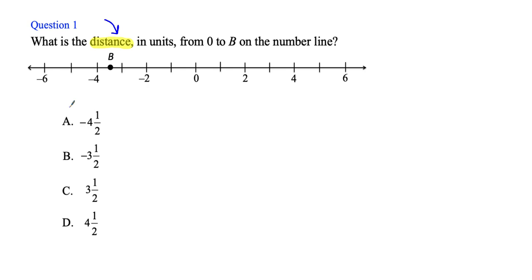Which two answers can we eliminate right off the bat? A contains a negative sign, so I can get rid of that. B contains a negative sign, so I can get rid of that. Now I just have to choose between C and D. If I need to guess, my chances have just increased. When you're taking the GED math test, you are not penalized for guessing. But let's narrow it down to the final answer — it's asking for the distance from zero to B.